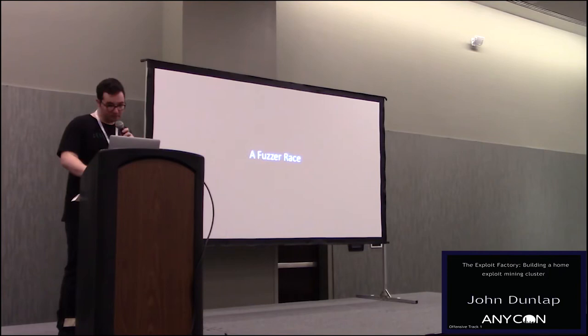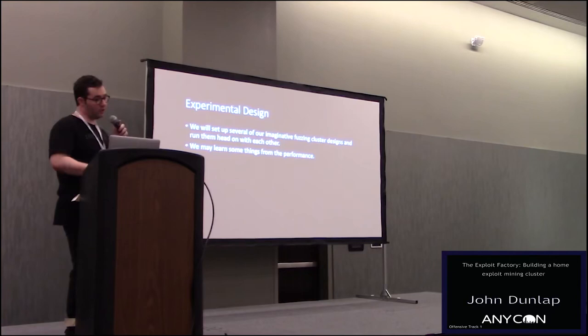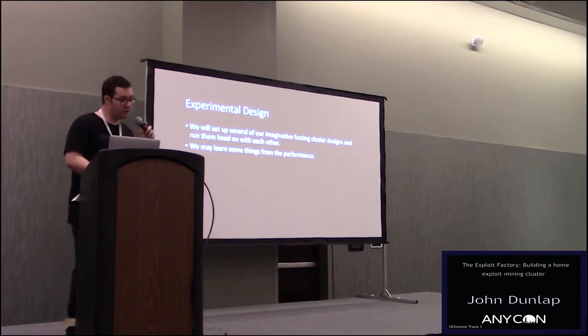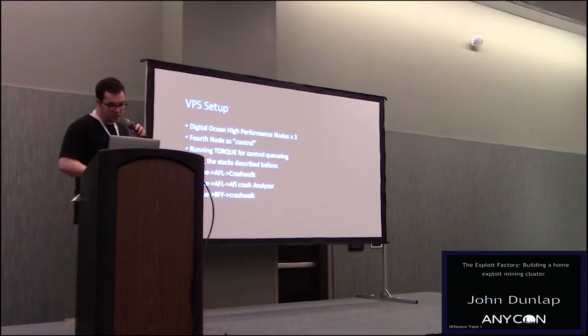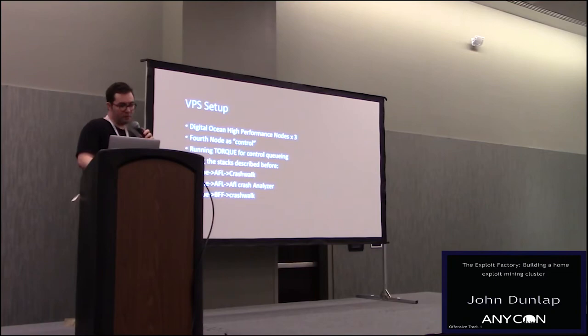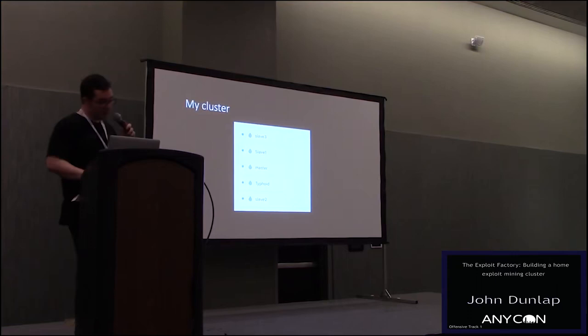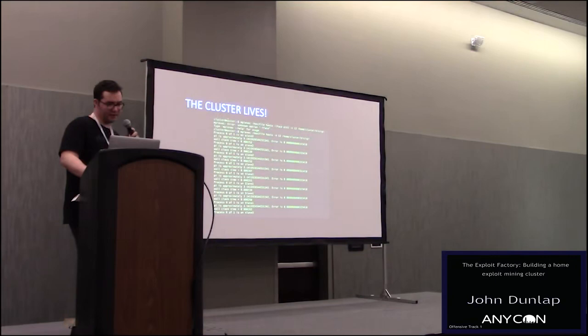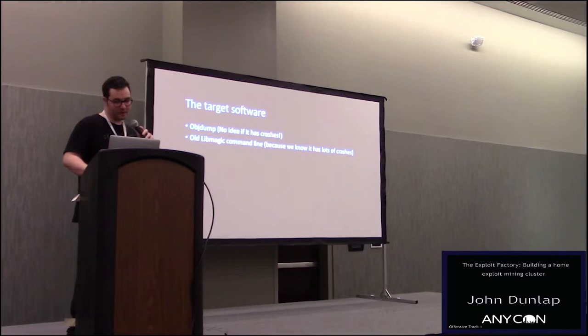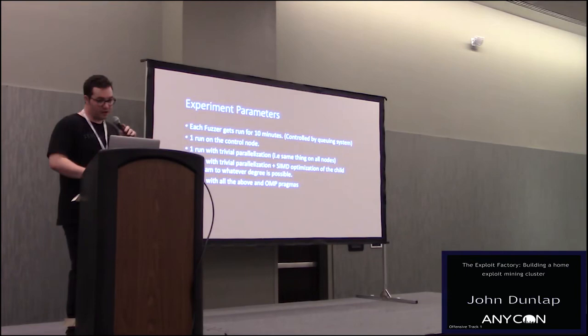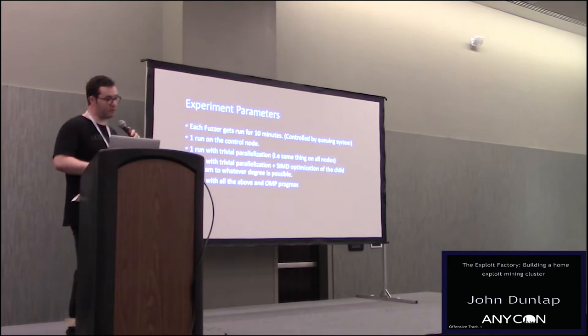To do some testing, I constructed a fuzzer race — an informal experiment to see how these optimizations sped things up, specifically the automated ones, and whether we could design a little automated fuzzing HPC system that would be profitable. Here's our experimental design: we set up imaginative fuzzing cluster setups on DigitalOcean — four nodes and a control, so five total images running Torque for job queuing. We took target software — Audjunk and LibMagic — counted crashes in a ten-minute run, and ran it against the control to see if we could get a speedup.